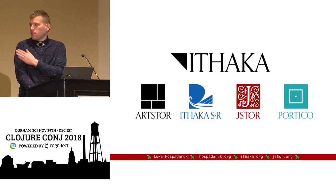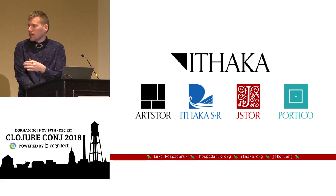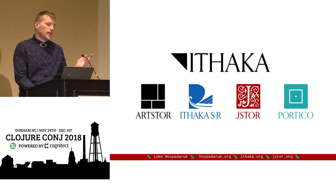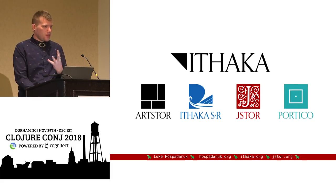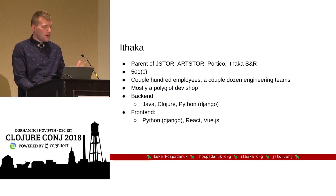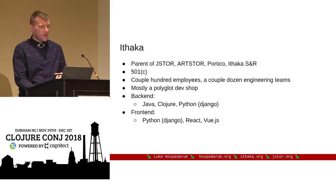About me and my company: I work for Ithaca. It's the parent company of ArtStor, Ithaca SR, JStor, and Portico. JStor is kind of the biggest thing under this umbrella. We are a non-profit with a couple hundred employees, a few dozen development teams, and a lot of different languages — but a lot of Python, Java, and front-end stuff.